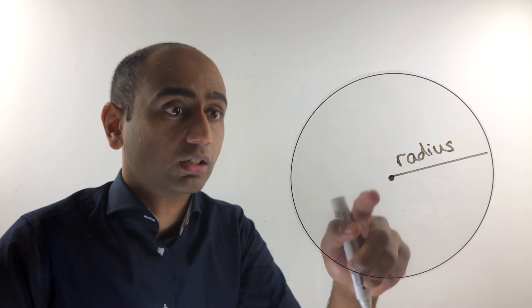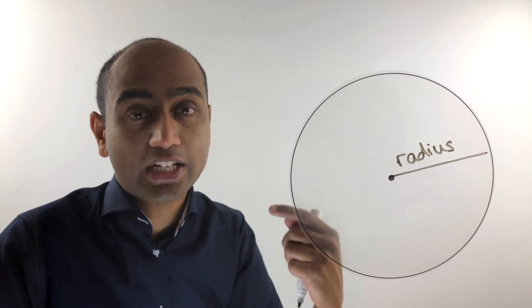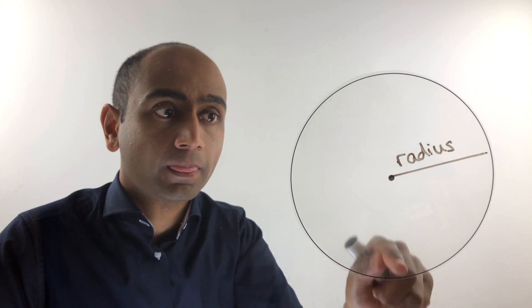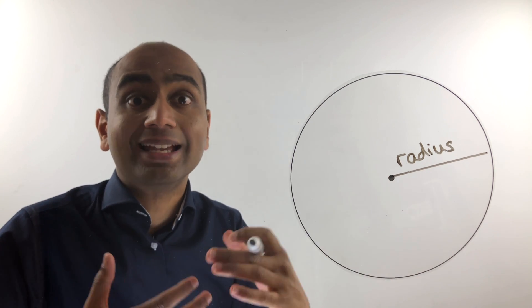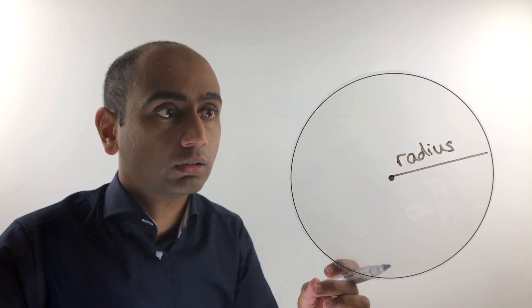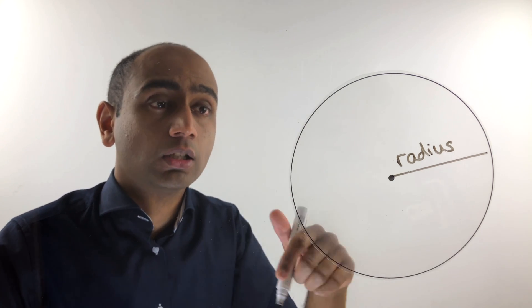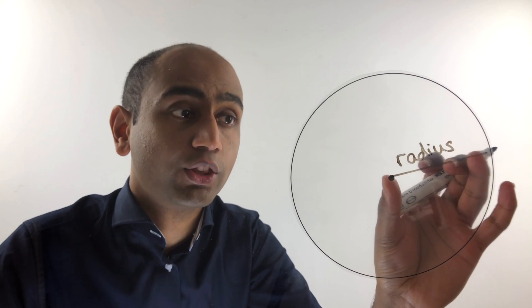It's not the only possible radius. I could have drawn this line in any direction from the centre to the edge, and any of those lines would have been a radius. Now when we say radius, we could be talking about such a line, but also we could be talking about the length of that line.